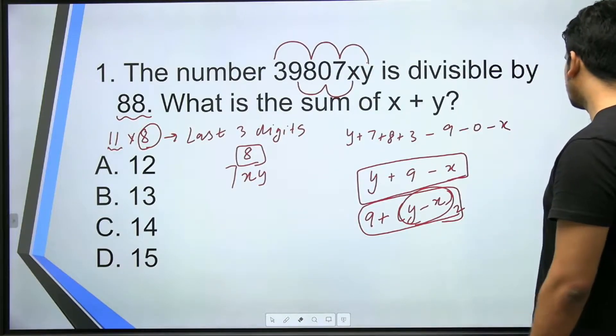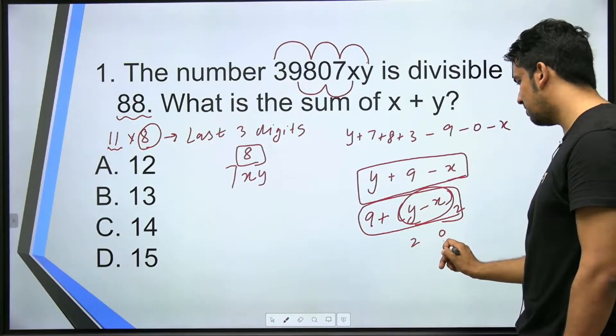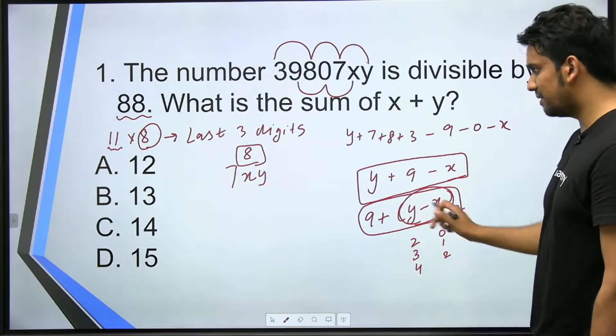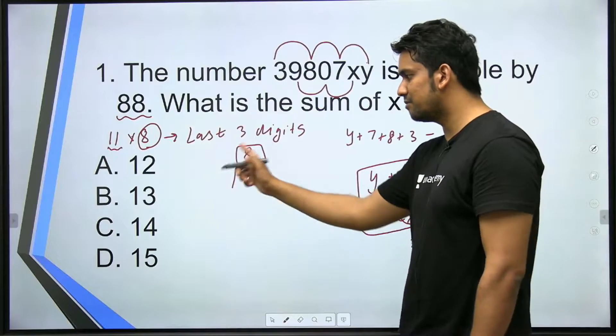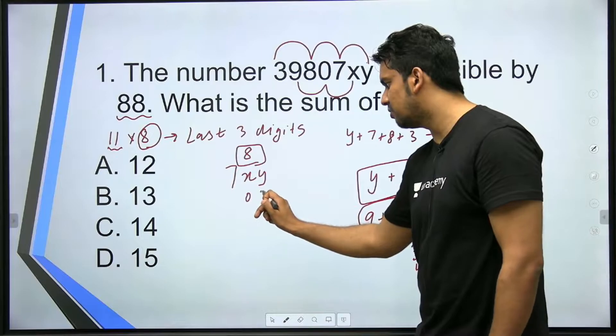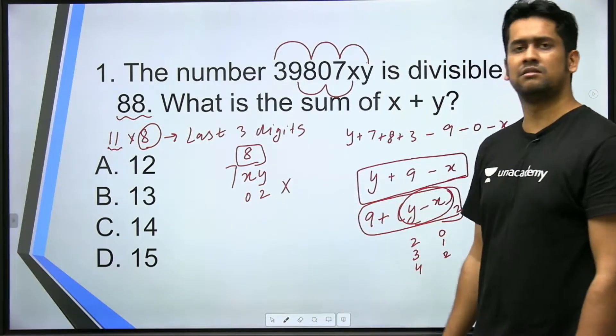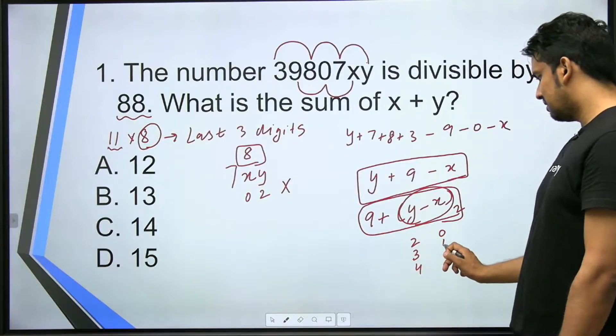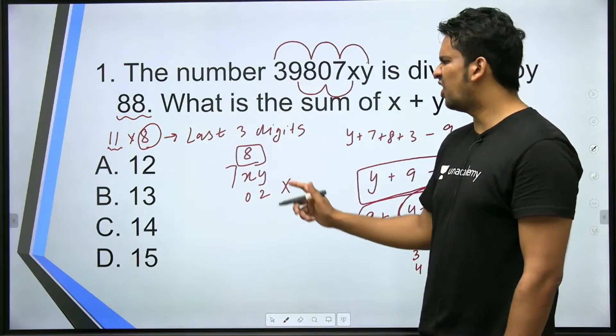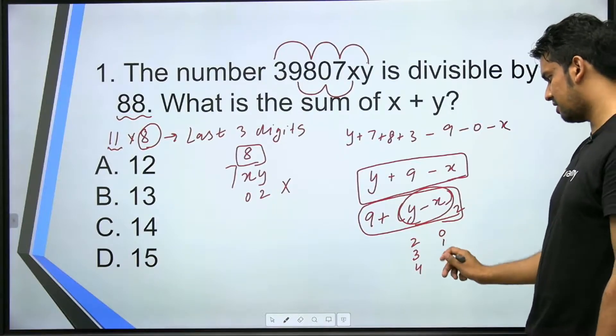So here I'll start putting values. So x's value can be 0, y's value can be 2; x's value 1, 3; 2, 4 and so on. But side by side I also have to check here that this whole number becomes divisible by 8. For example x is 0, y is 2: 702. Is this number divisible by 8? It's not. Similarly, next is 713. If I put 1, 3 here then that number will become odd. Odd numbers are not divisible by 8.